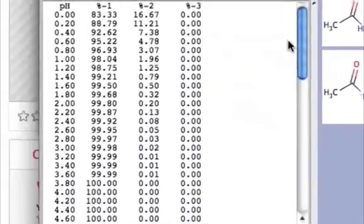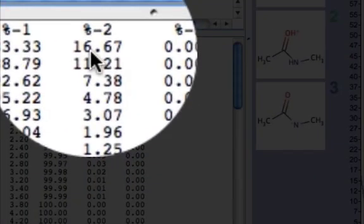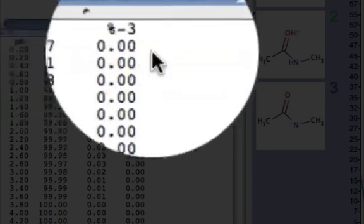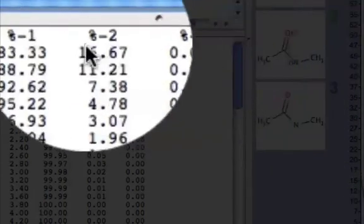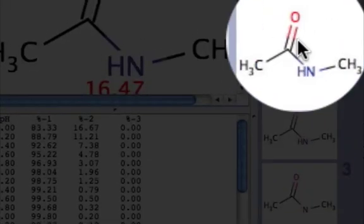You can also see that in the table at pH 0, 16.67% of the time we're going to be protonating that particular oxygen to give this structure shown here for 2, and 83.33% of the time we'll still have number 1.